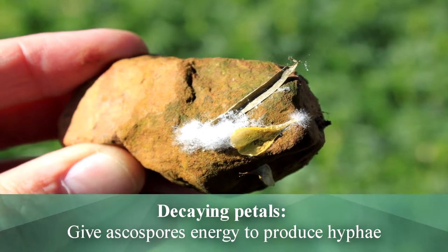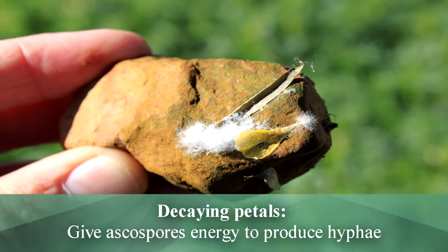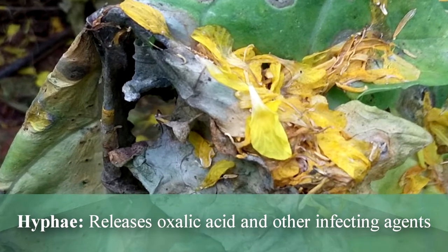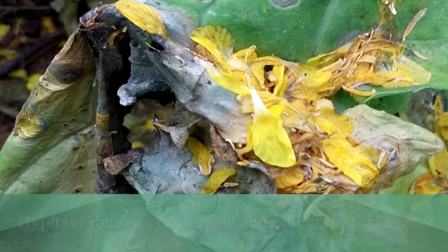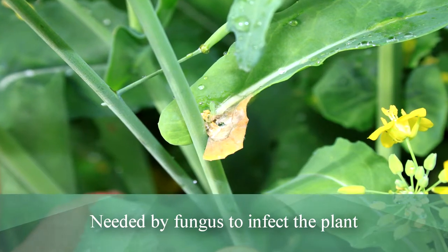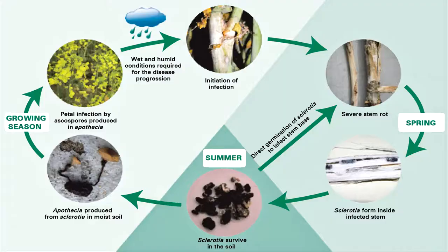They need dead tissues such as fallen petals adhering to leaves and stems to continue their life cycle. Decaying petals give ascospores the energy to produce hyphae that release oxalic acid and other infecting agents, which the fungus needs to invade healthy plant tissue. Once inside the plant, the mycelium grows up and down the stem, eventually cutting off moisture and nutrient flow and killing the plant. Sclerotia then form in the stem, completing the life cycle.